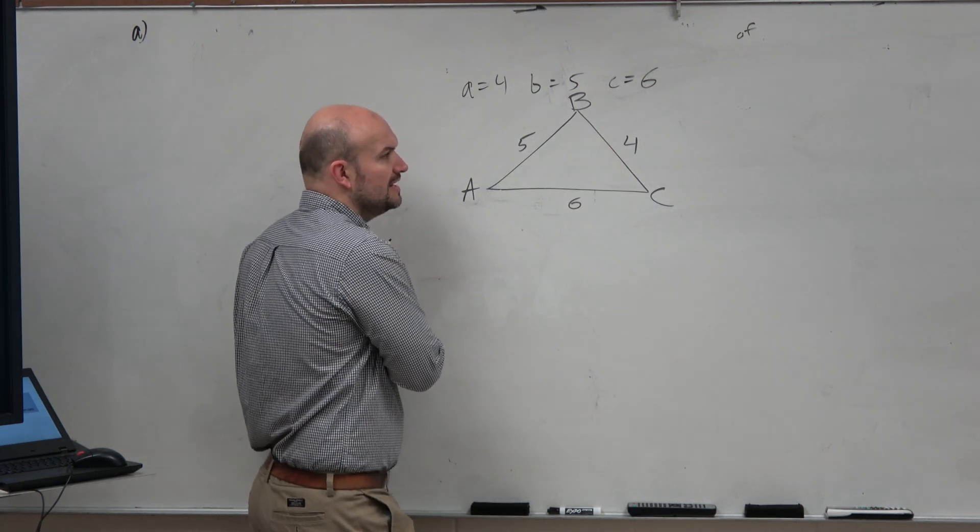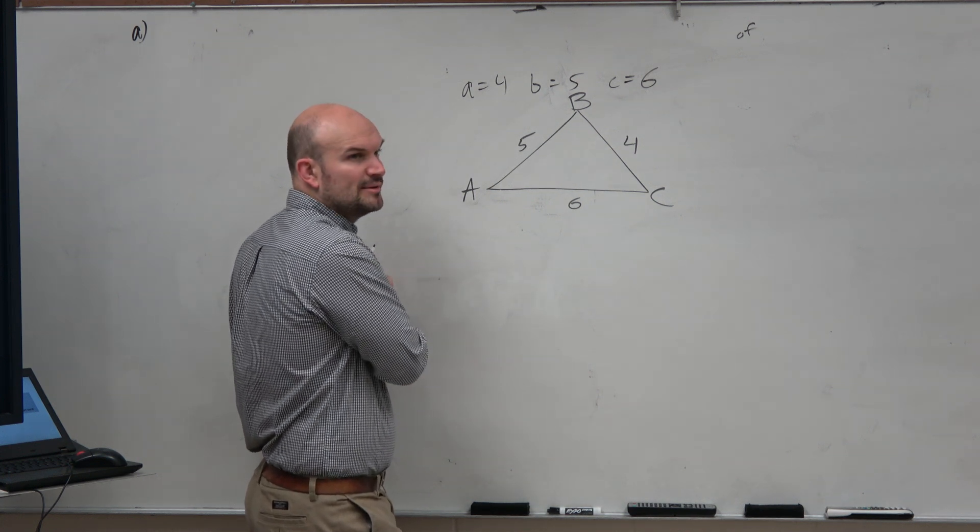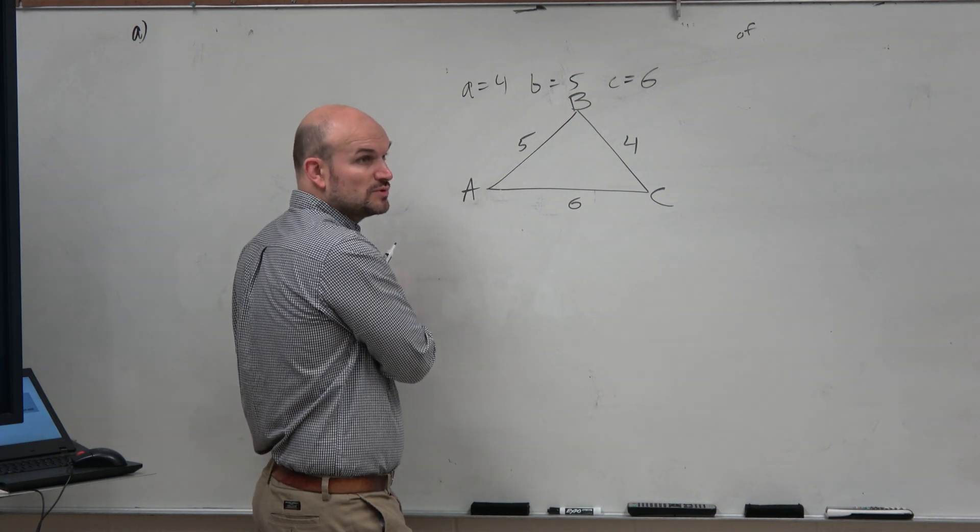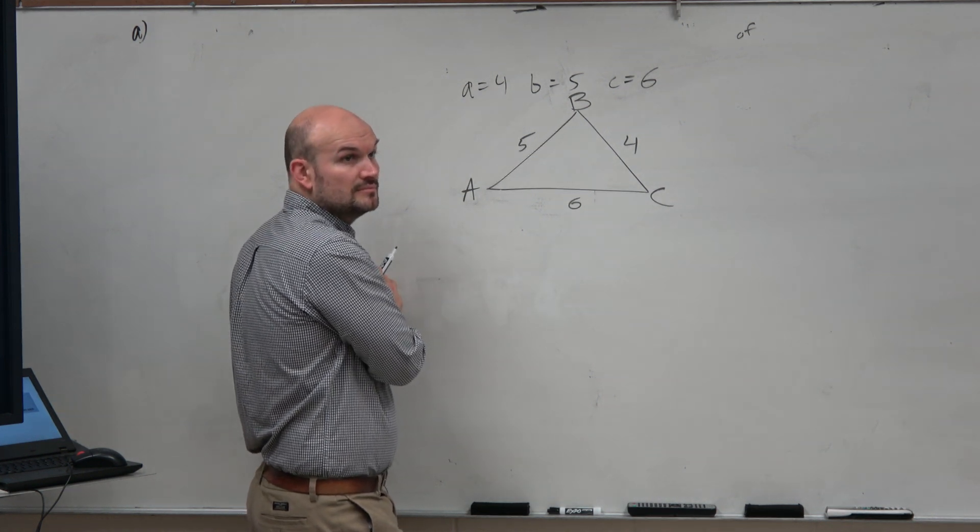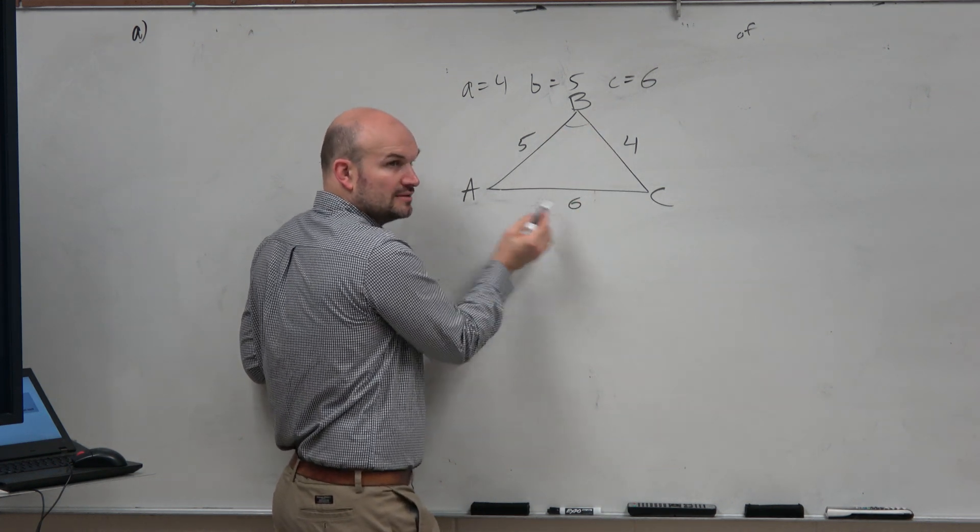Well, if we're given three sides, if there is an obtuse angle, which angle would it be? If one of these angles is obtuse, which one is it? Right? Because the largest angle is going to have the largest side.